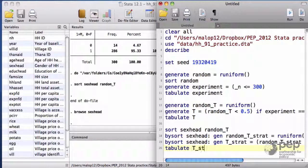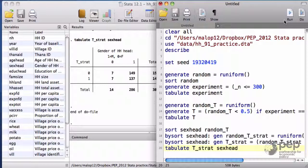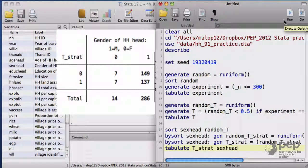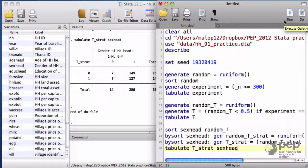I print a table to see the result, T_strat, sex head. There is a total of 14 female household heads. Seven of them are in the treatment group, the other seven in the control group. That's a good balance.